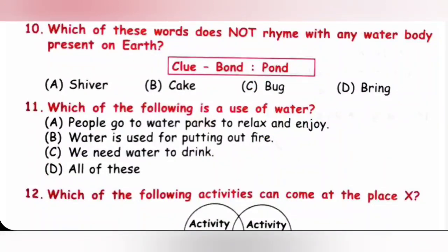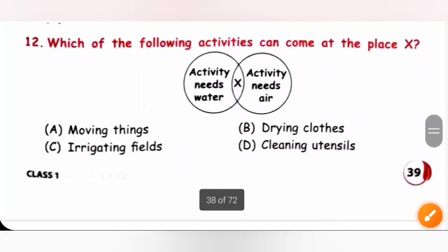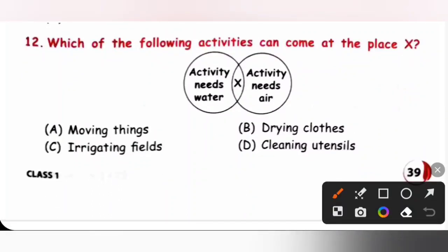Question 12: Which activity can come at place X, needing both water and air? Options: A moving things, B drying clothes, C irrigating field, D cleaning utensils. Drying clothes needs air. Irrigating a field and cleaning utensils need water. Moving things needs both — water moves a boat and air moves a parachute or kite. Option A is the correct answer.